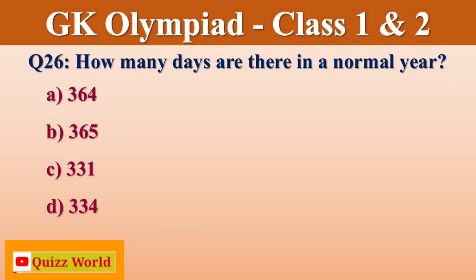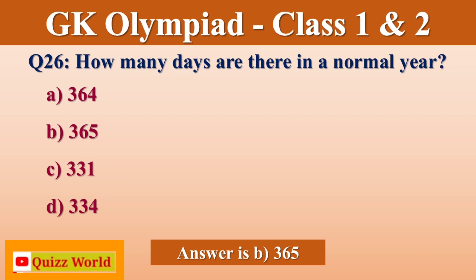How many days are there in a normal year? 364 days, 365 days, 331 days, 334 days. Right answer is 365 days.